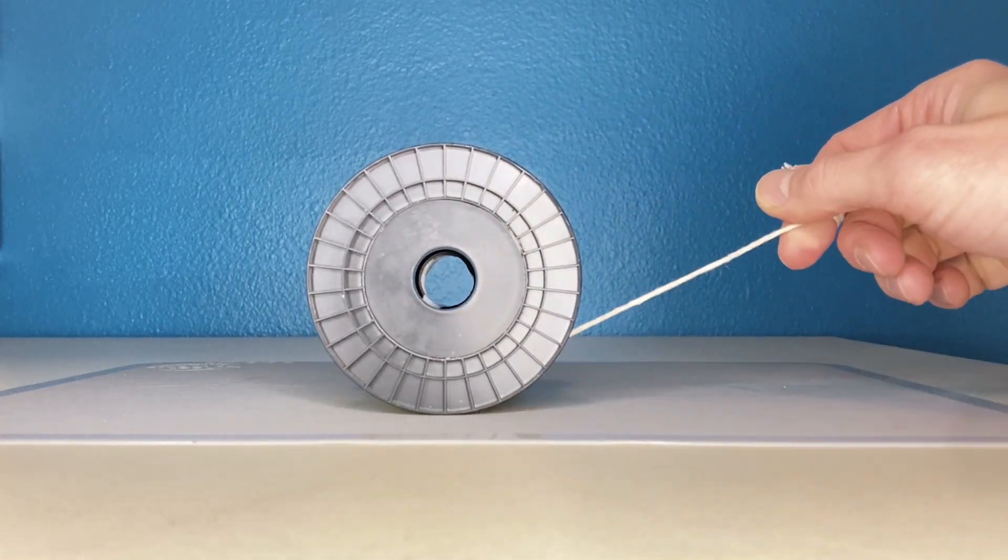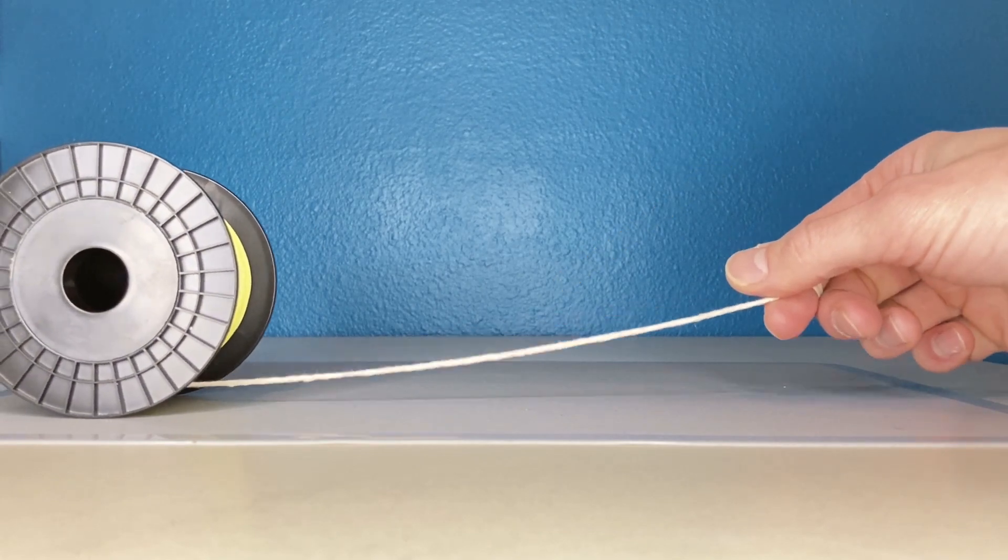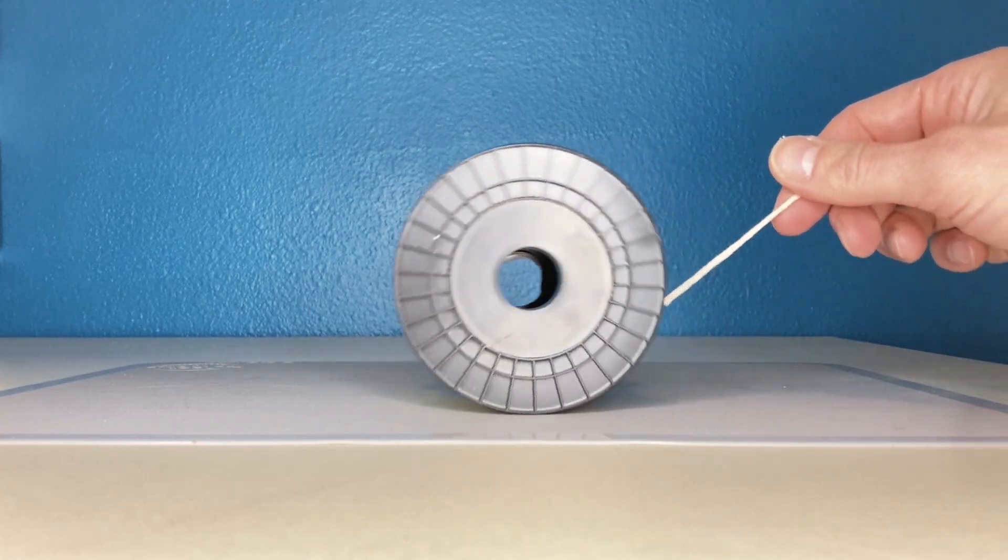Now, when I pull on this string, if I pull slightly up at an angle, the spool tries to go one way. And if I pull almost horizontally, the spool and string try to go the other way.